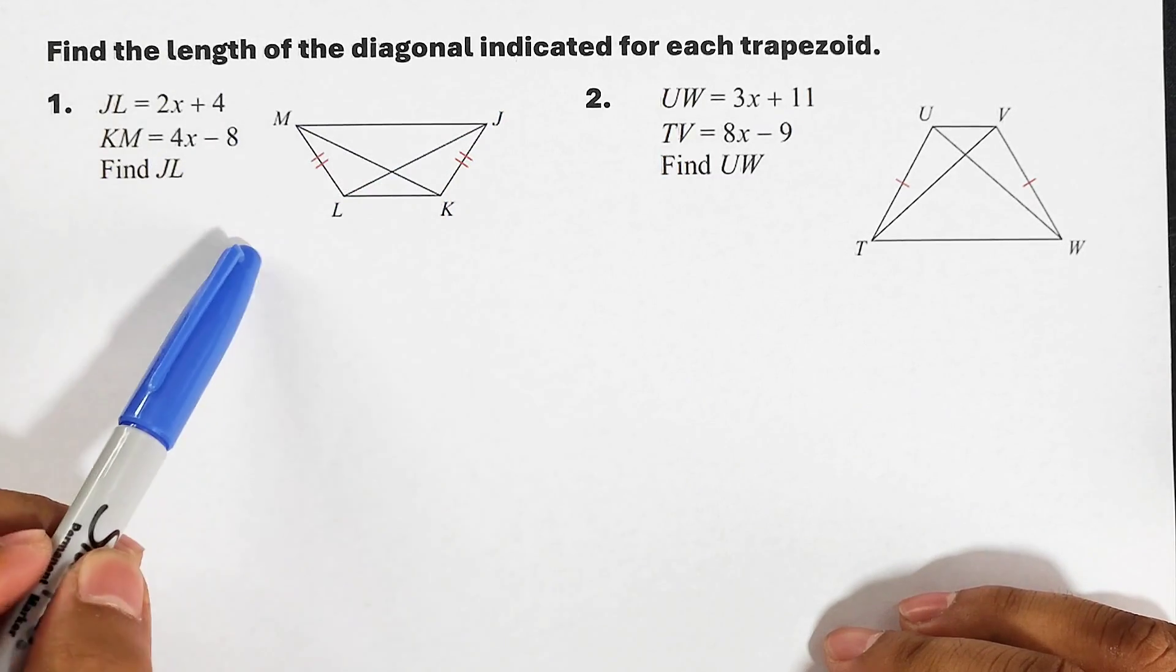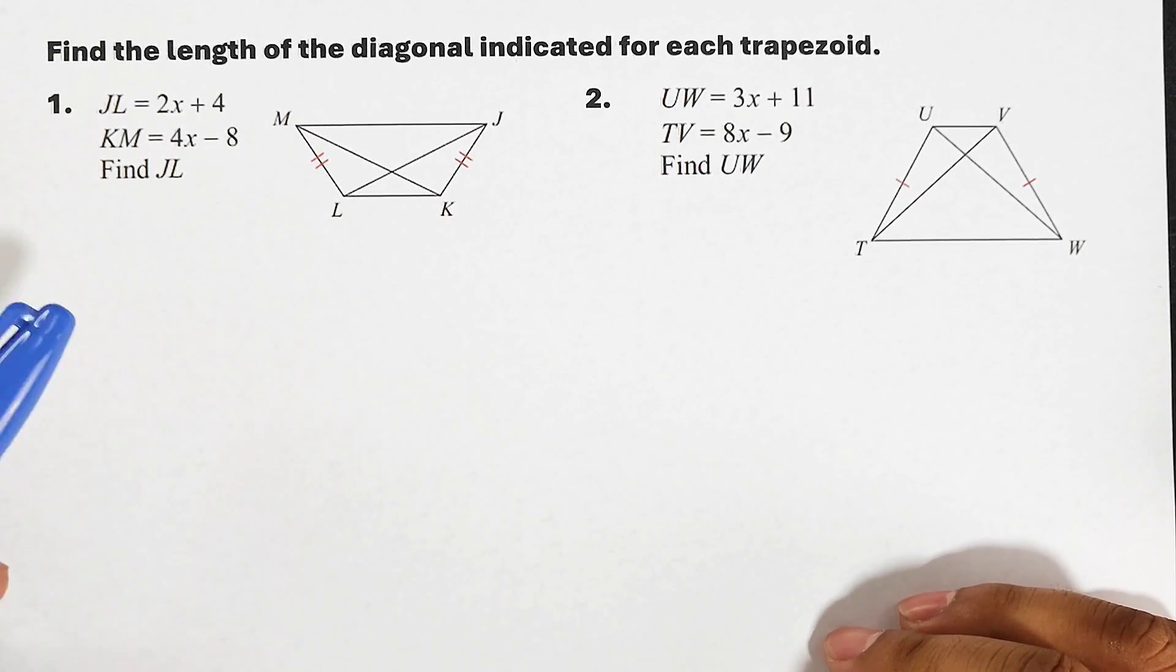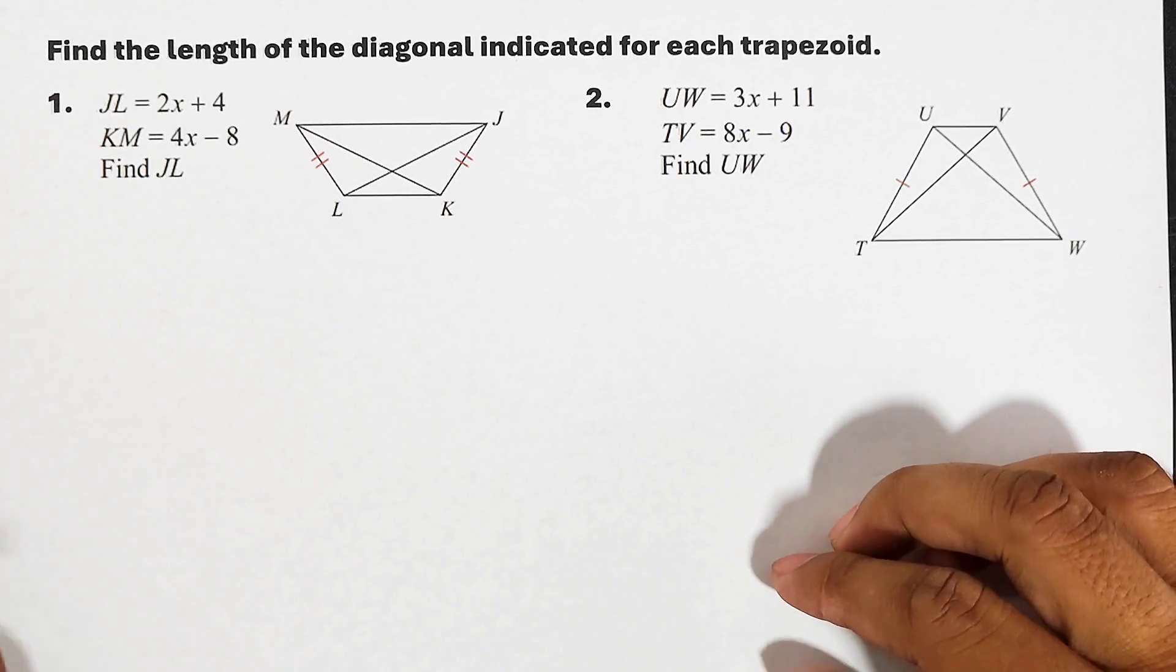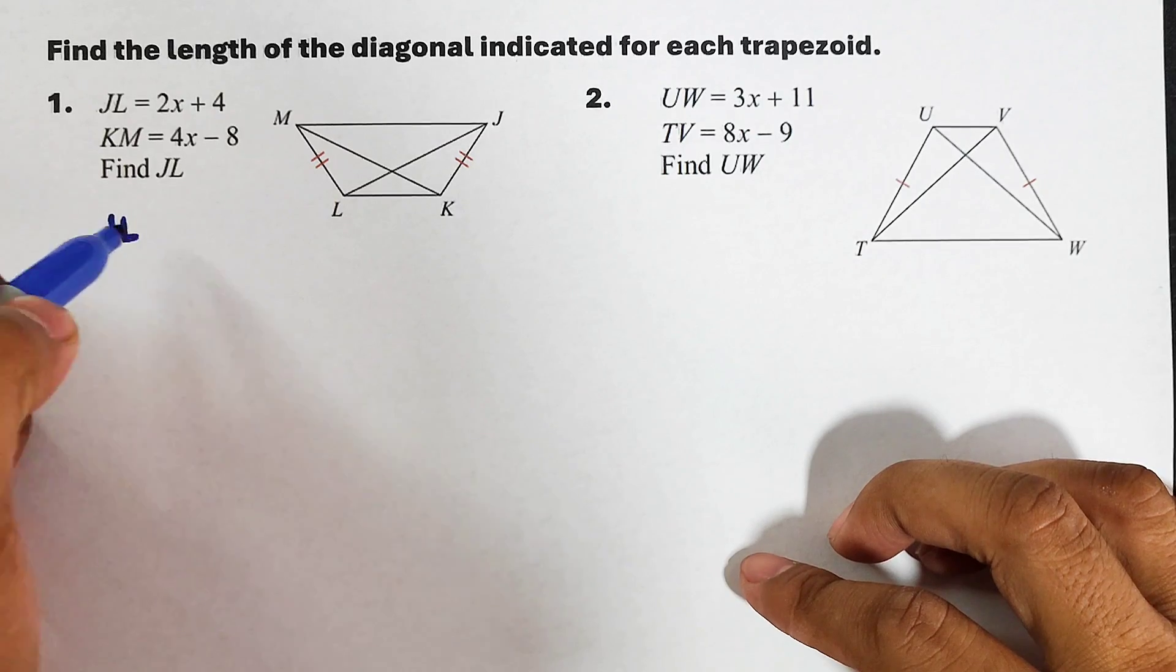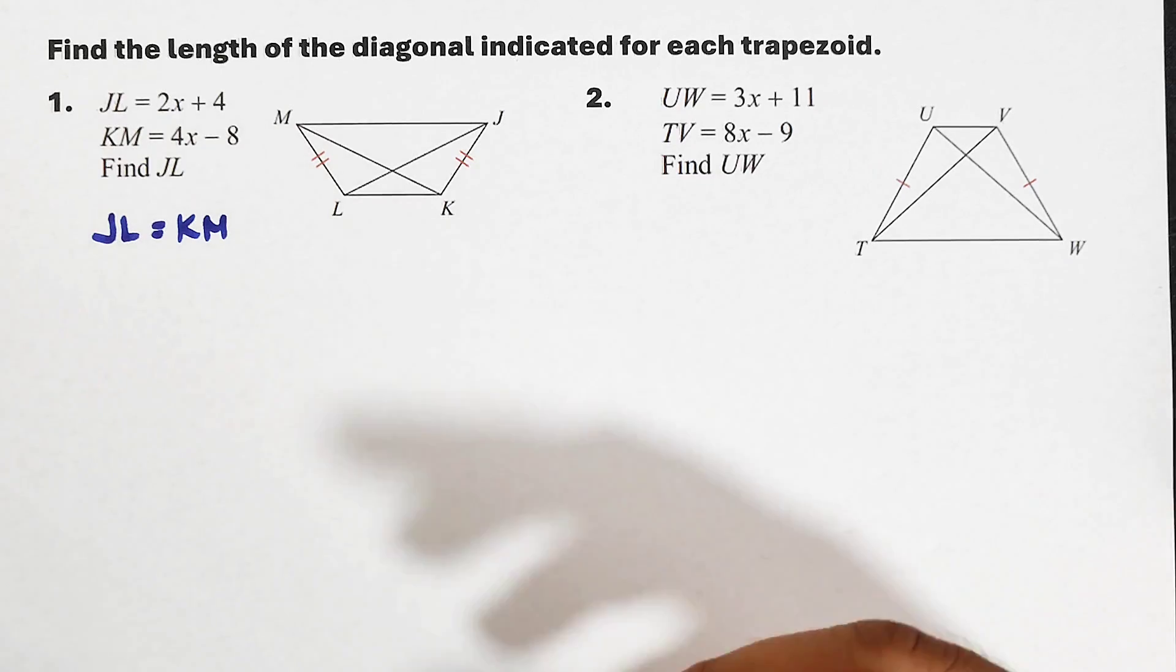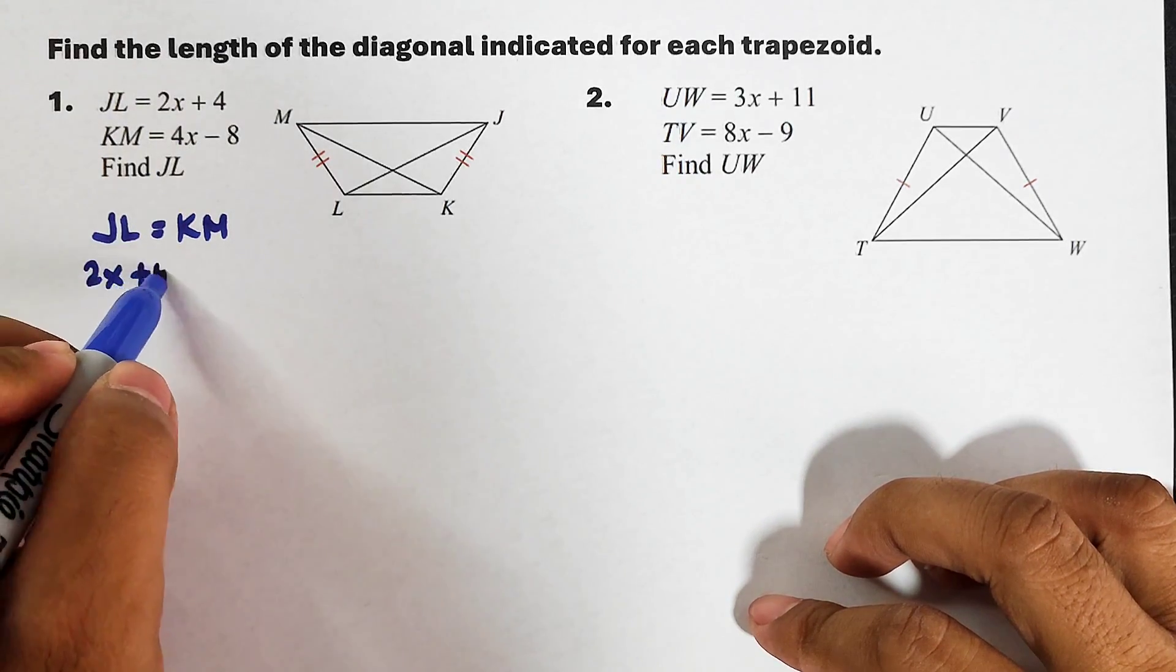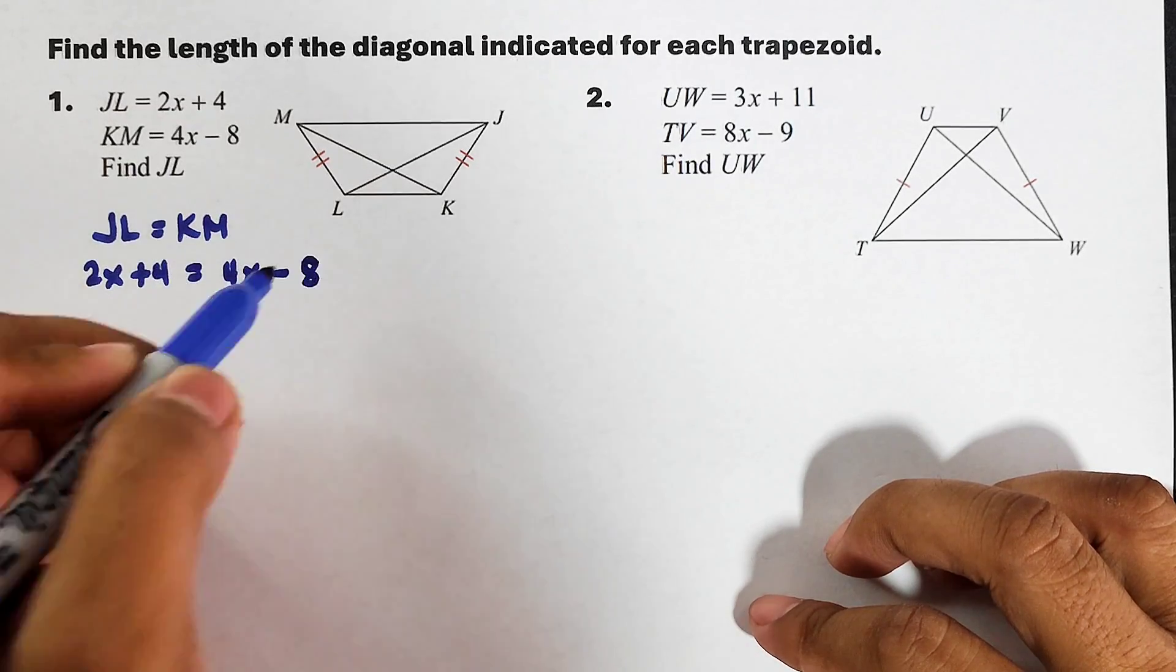So let's see, number one: JL equals 2x plus 4, this is JL, and then for KM we have 4x minus 8, and we are asked to find JL. First thing we need to do is find the value of x, and that would be JL equals KM because the diagonals are equal or congruent.